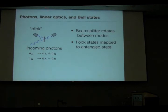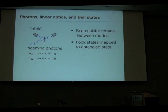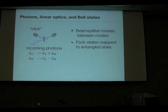Imagine a photon coming in on some path and hitting a 50-50 beam splitter. A photon coming from the left hits the beam splitter and splits off going left and right with equal probability. The unitary transform associated with that takes the photon annihilation operators and changes them to these rotated superpositions. We can do this in the laboratory with extremely high fidelity — these linear optics devices are very well done.